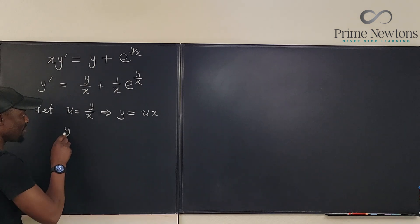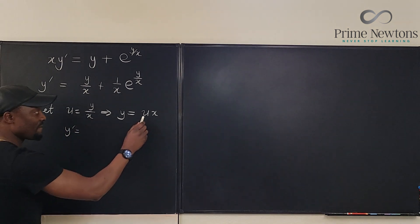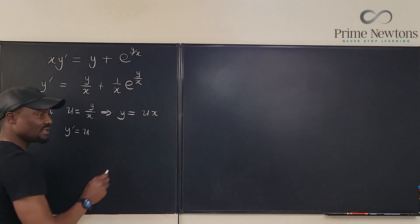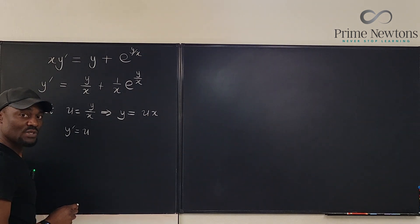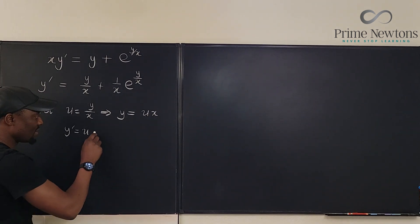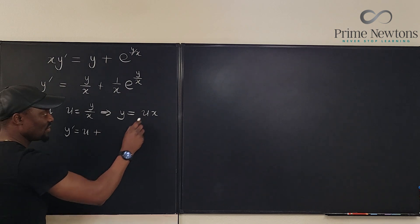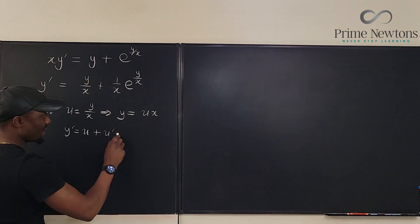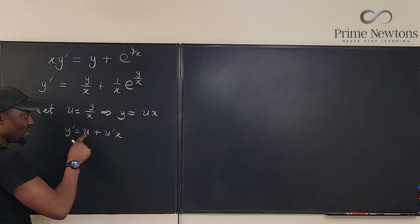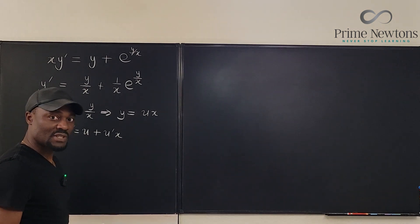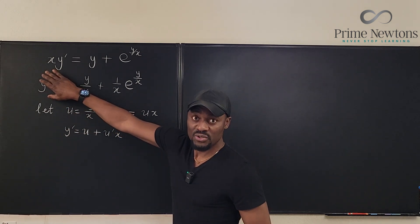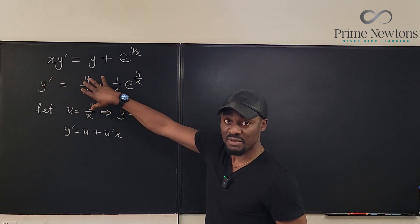So we see that y prime is going to be, we keep the first we differentiate the second. If you differentiate the second what do you get? You get one plus you differentiate the first u prime you keep the second x. So y prime becomes u plus u prime times x. Now we're going to go back to this equation and replace, do all the replacements that we can do.